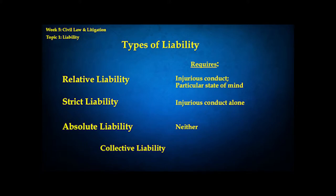One type is called relative liability. In relative liability, you can't hold someone accountable unless they've committed injurious conduct and did it with a particular state of mind. The person actually has to have done something harmful, and they have to have been intentional about it, or they could have foreseen it would lead to harm. You see this in criminal law too — the difference between manslaughter and first- and second-degree murder basically depends on the killer's state of mind. In civil law, this might mean a person shouldn't be held responsible for an injury from a product unless they knowingly sold a defective product.